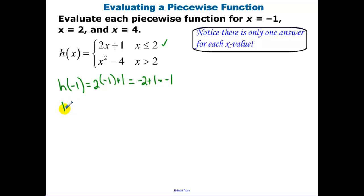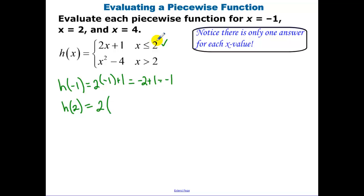Now to find h of 2. We plug in 2 wherever we see an x. When x equals 2, we again use the top function. We plug in 2 into our top function and we get 5.